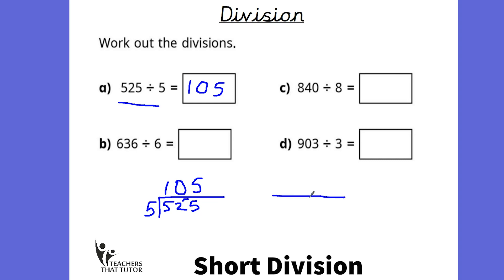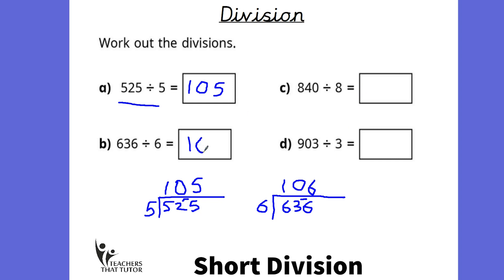Let's try B now. Same strategy — we're going to put the large number 636 under the bus stop and 6 is going to go on the outside. 6 into 6 goes once. How many sixes in 3 — we can't do that. So we join those two parts together. How many sixes into 36? If we know our six times table — 6, 12, 18, 24, 30, 36 — it's going in six times, giving us an answer of 106. And you might notice a pattern here with these two: the answers are similar, just one greater.